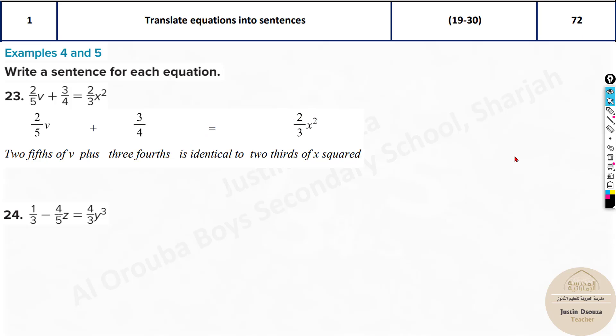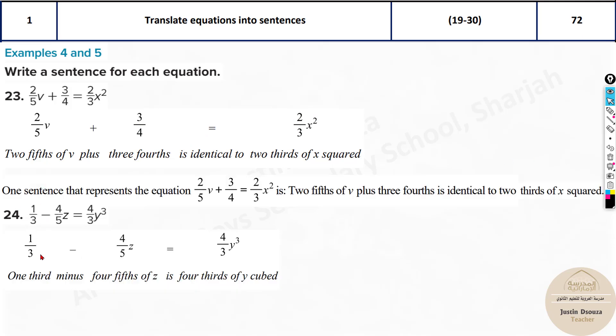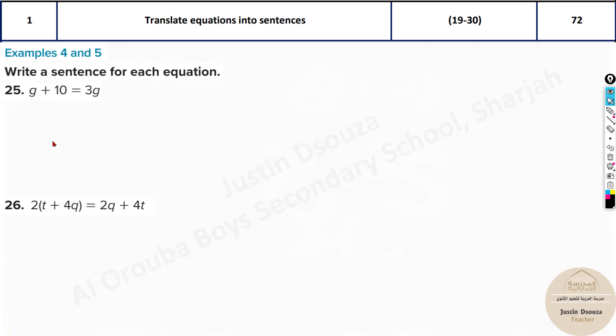Generally they will give you two-fifths, three-fourths, two-thirds, or one-third. You can write the division of two by five, but it won't be generally appropriate. It would be just two-fifths. Two-fifths of v plus three-fourths of, what, three-fourths is two-thirds of x squared.